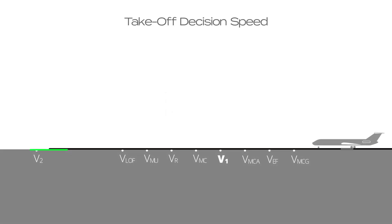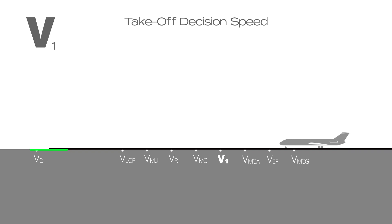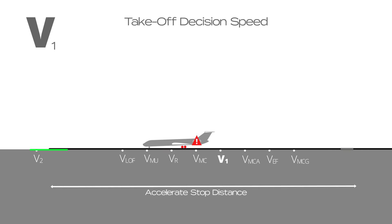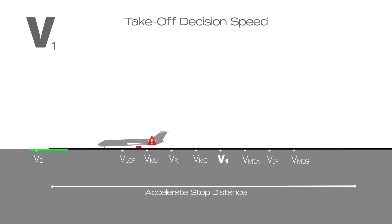Takeoff decision speed is represented by V1. This is the maximum speed during takeoff at which the pilot must take action, such as apply the brakes and reduce thrust, to stop the aeroplane within the accelerate stop distance in the event of an emergency.